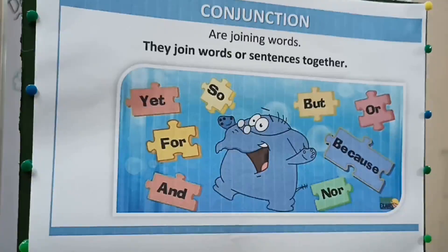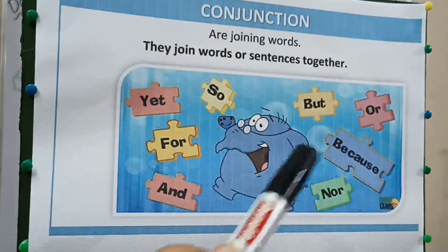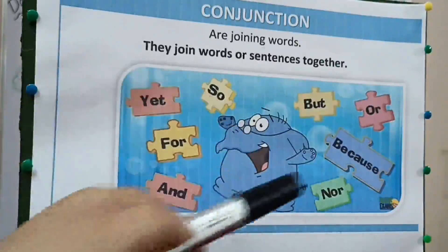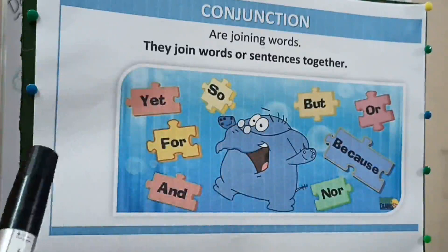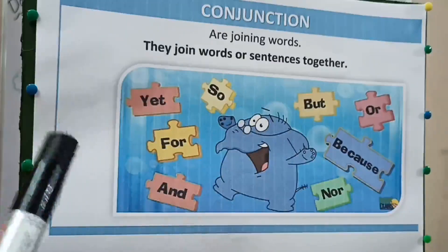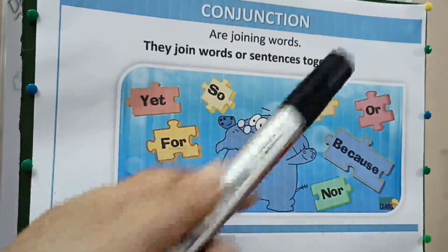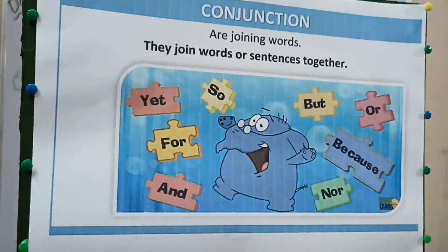And the last one is 'because'. 'Because' is used for a reason. For example: he is crying because he fell down. So these are the conjunction words which are used for joining a noun, word, sentences, or phrases together.